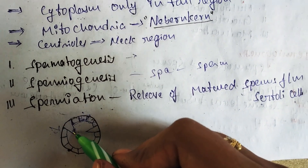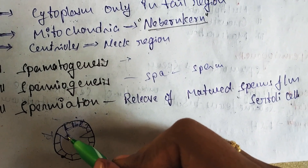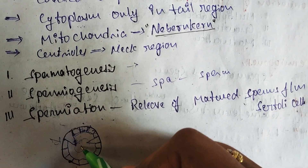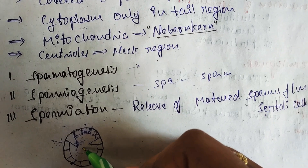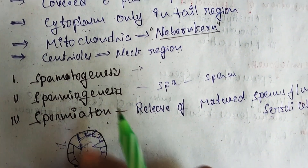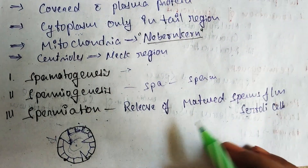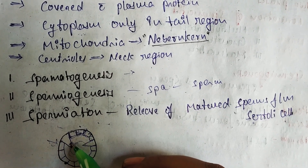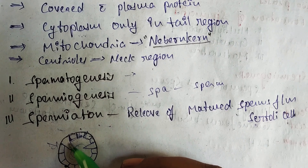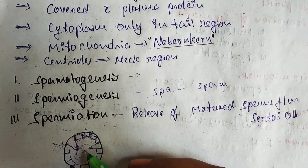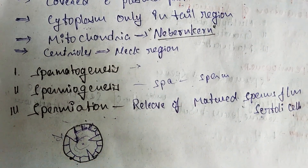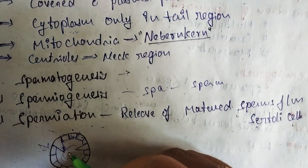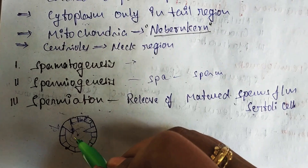Sertoli cells release the matured sperms into the lumen of the seminiferous tubules. The lumen of the seminiferous tubules receives the released sperms. This process is called spermiation — the release of matured sperms from Sertoli cells into the lumen of the seminiferous tubules.